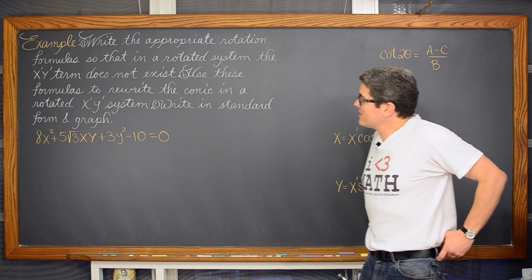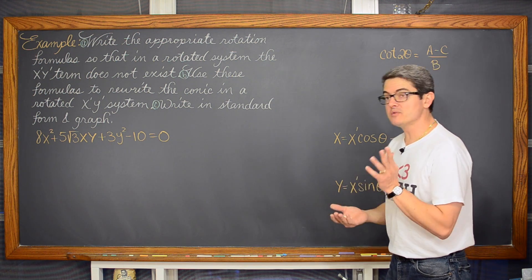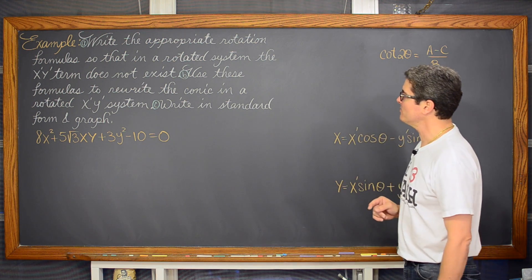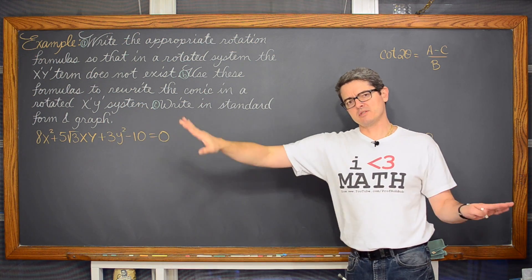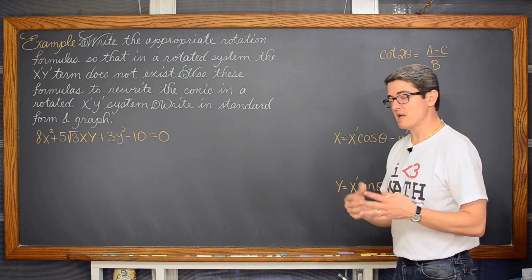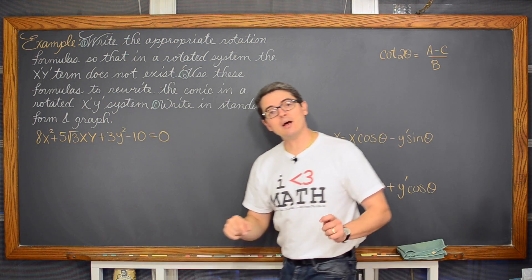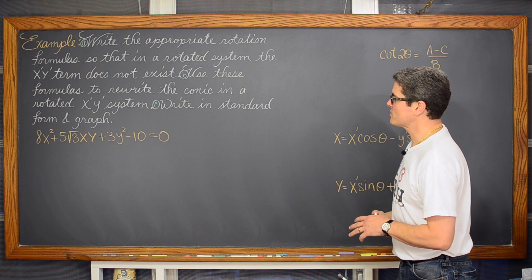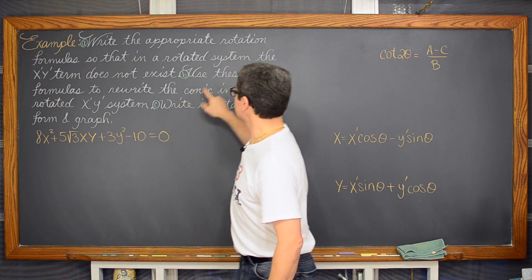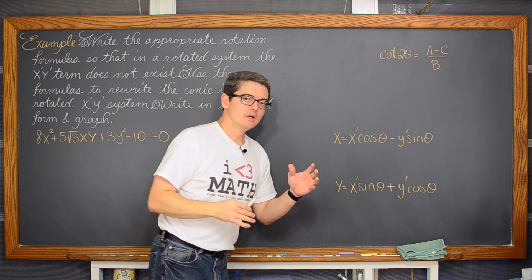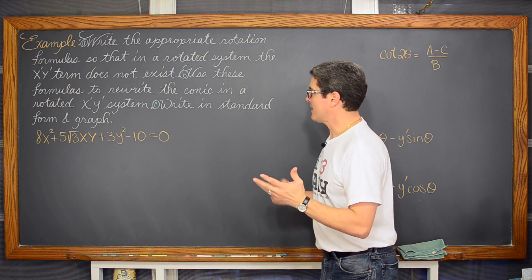First example: we are going to write the appropriate rotation formula so that in a rotated system the xy term does not exist. We are going to use these formulas to rewrite the conic section in a rotated x-prime, y-prime system — rotating the x and y axes to make a new pair — then write that transformed equation into standard form and graph it without the aid of a calculator, finishing with the calculator. First, we find the angle we need to rotate the x and y axes. We will need to clear the board for all the algebra in part b.